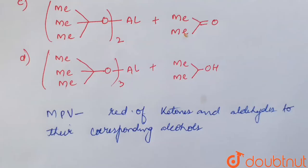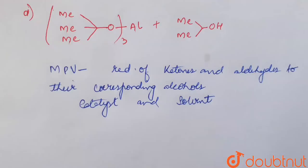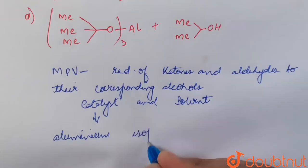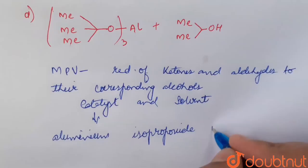So it involves catalyst and solvent. The catalyst used in these reactions is aluminum isopropoxide, aluminum isopropoxide, that is (Me2CH-O)3Al.